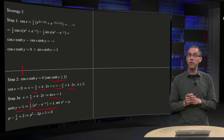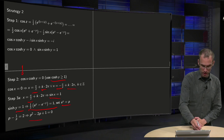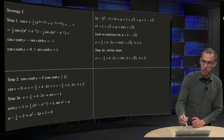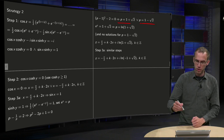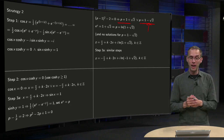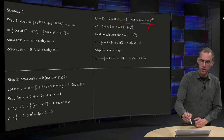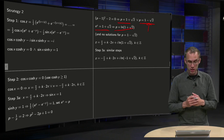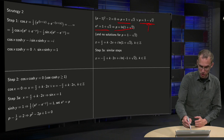We can solve sinh(y) equals 1 in a similar way as in strategy 1: set e^y equals p, which gives a quadratic equation for p. Solving it yields two solutions; one is negative and must be rejected since e^y is always positive. So we only have solutions from the positive root, giving a value for y.